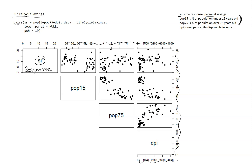When it comes to this top row, if SR is my response, then on the y-axis we have SR and on the x-axis we have POP15. So that's just like a scatterplot. I can see that there is a bit of a negative trend. Overall it seems to be pretty linear, with a couple of maybe potential outliers, but nothing really standing out too bad.